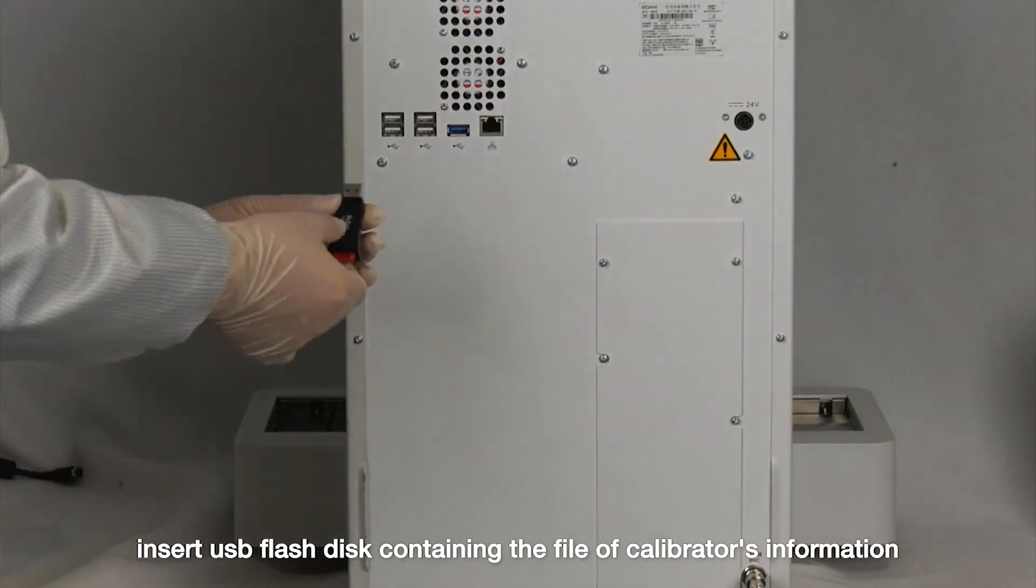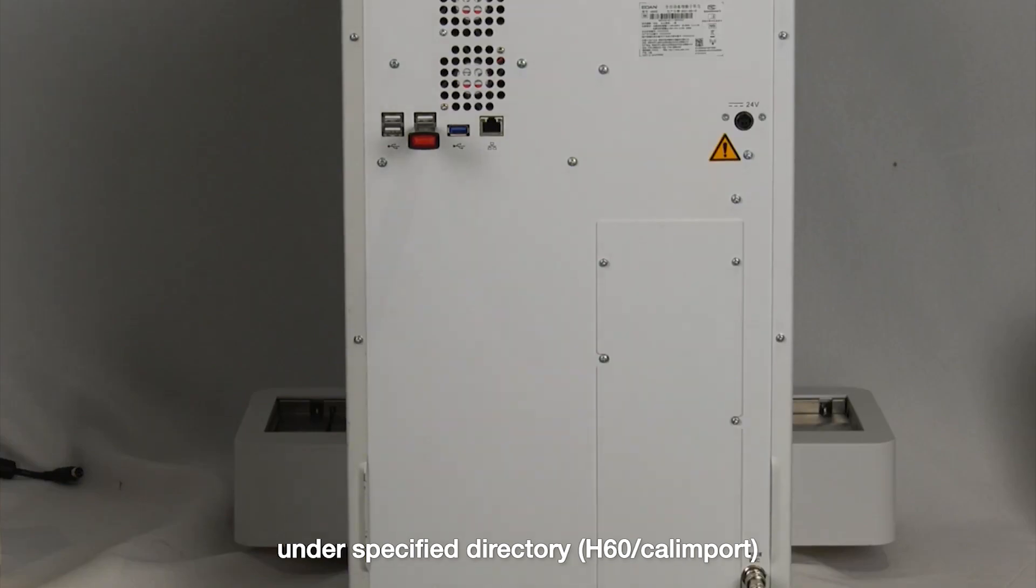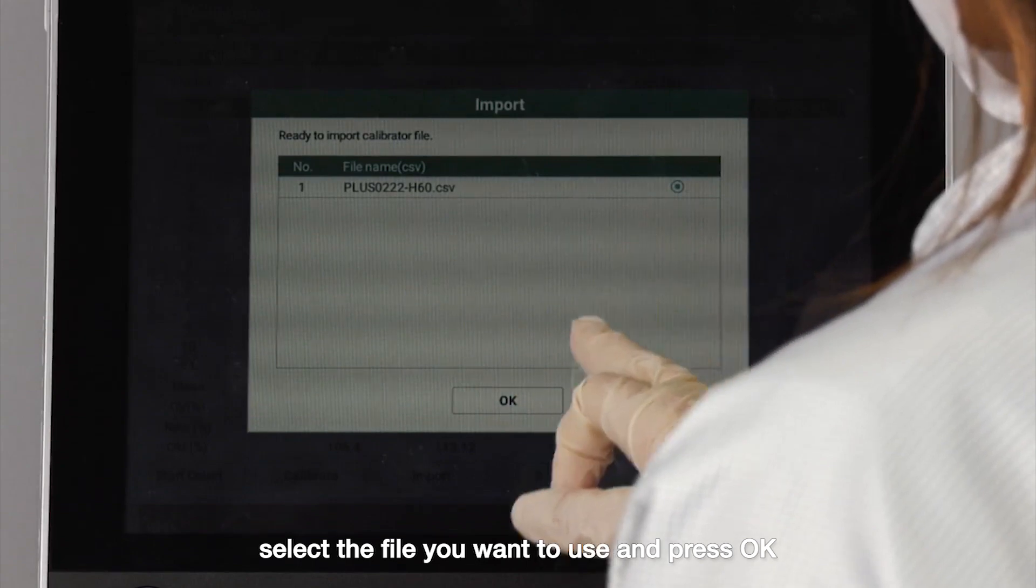Insert USB flash disk containing the file of calibrator's information under specified directory. Press import button. Select the file you want to use and press OK.